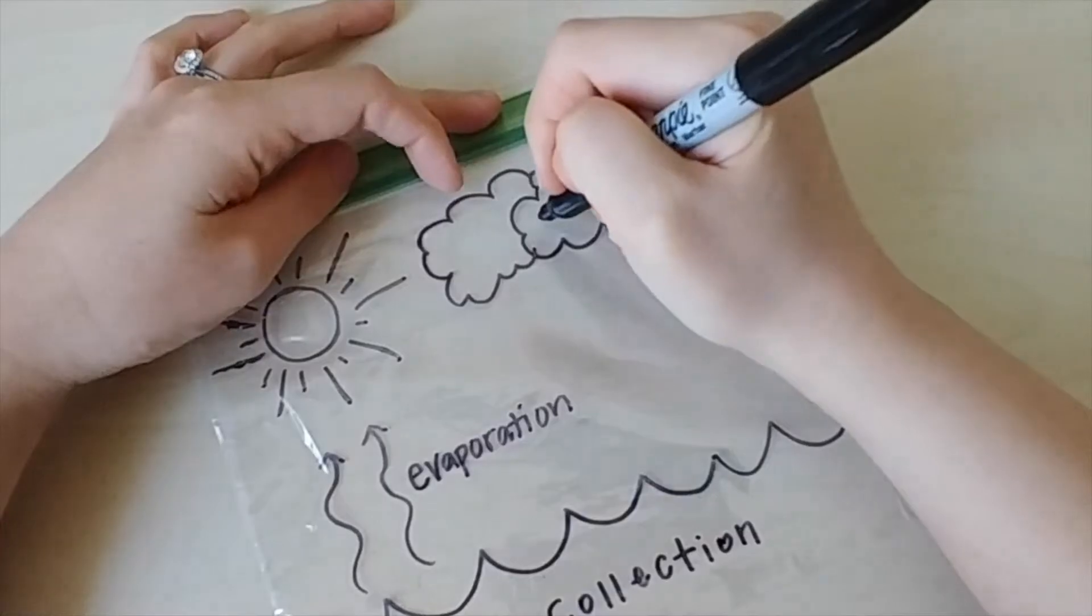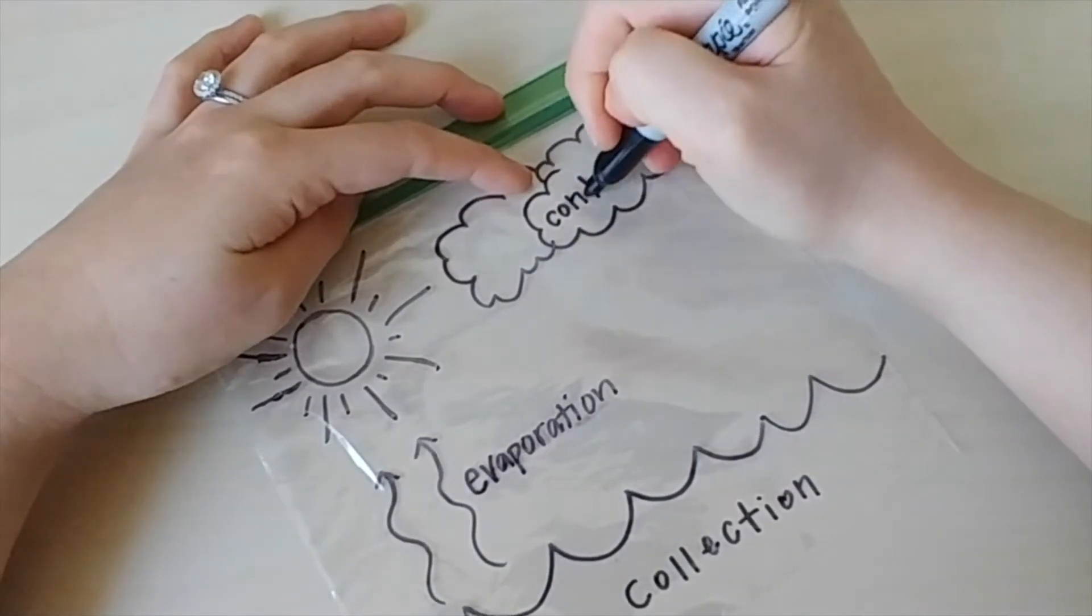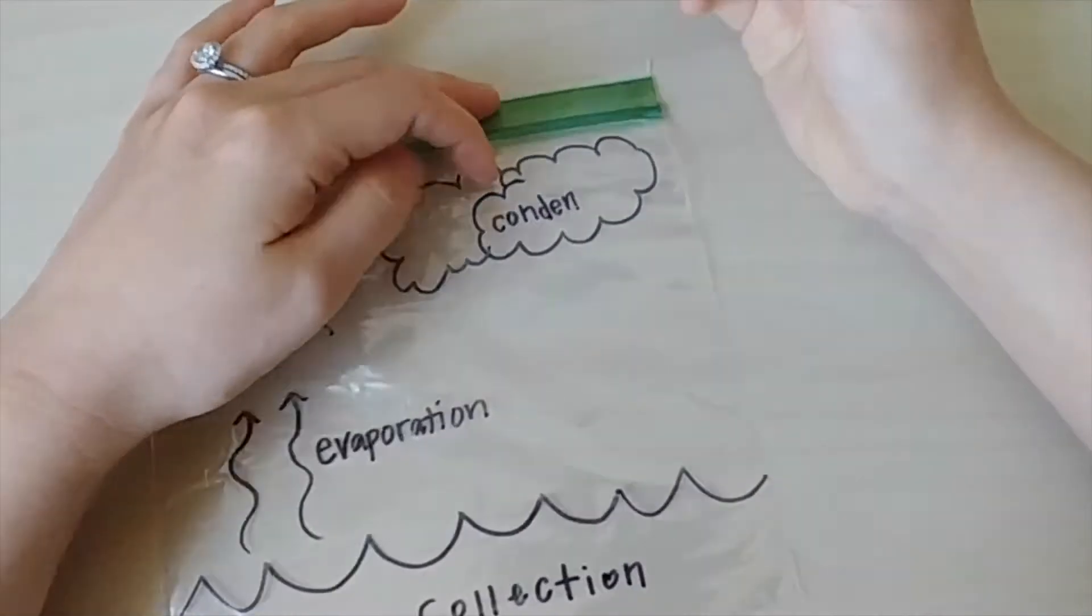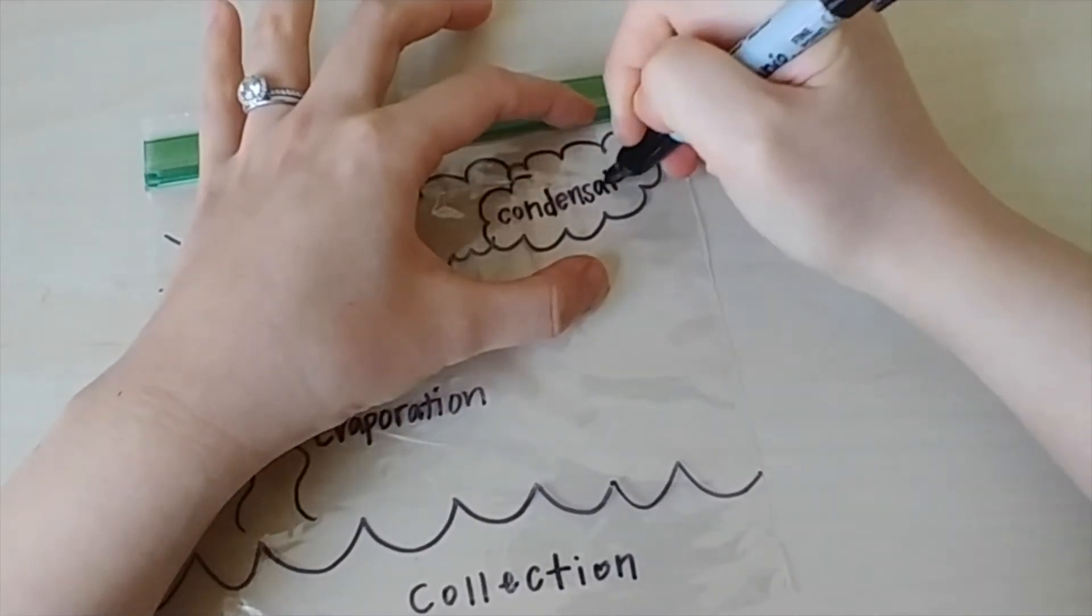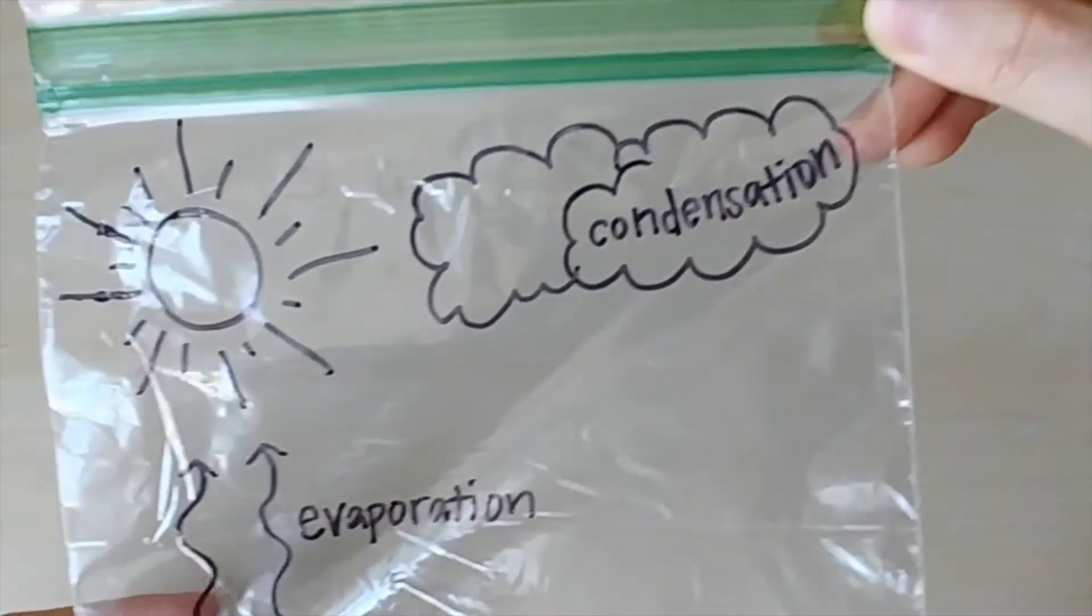And this is what we call condensation. When water droplets condense, they form clouds as they return back to liquid form. Condensation is spelled C-O-N-D-E-N-S-A-T-I-O-N.